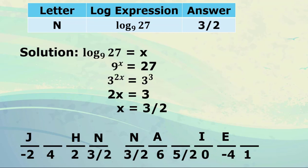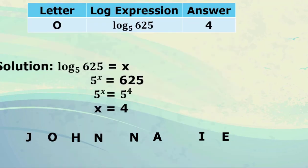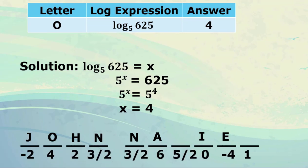Moving on to letter O: log of 625 to the base 5. We let it equal x, so 5 raised to x equals 625. Since 625 equals 5 raised to 4, obviously x equals 4. We write letter O next to 4. The first name of the mathematician who invented logarithms is now revealed: John.